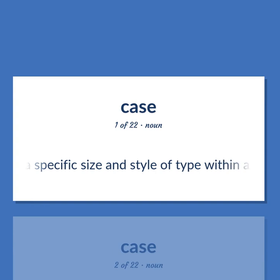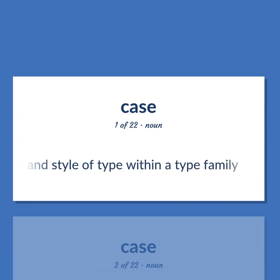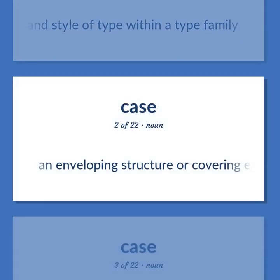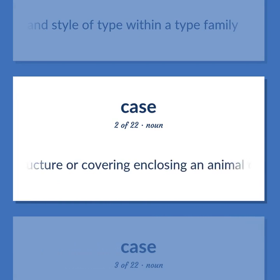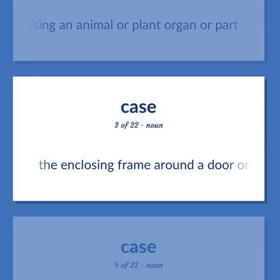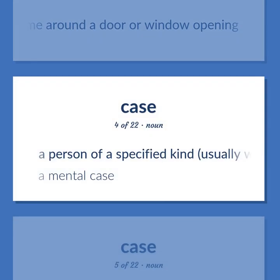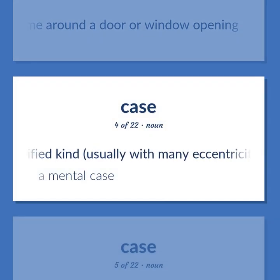CASE: A specific size and style of type within a type family. An enveloping structure or covering enclosing an animal or plant organ or part. The enclosing frame around a door or window opening. A person of a specified kind, usually with many eccentricities.